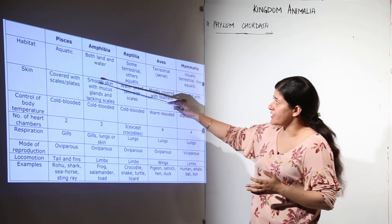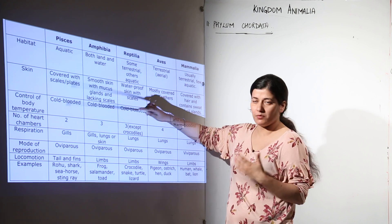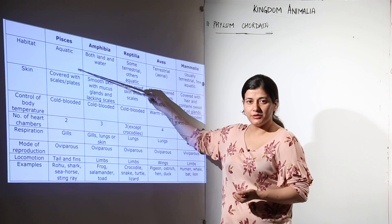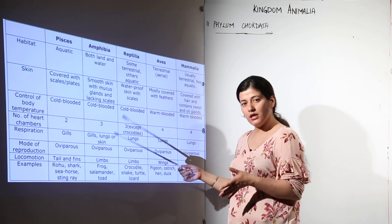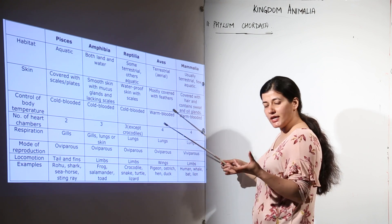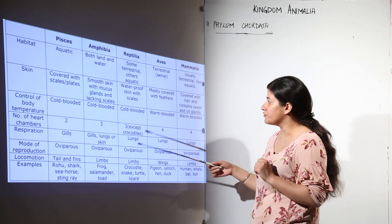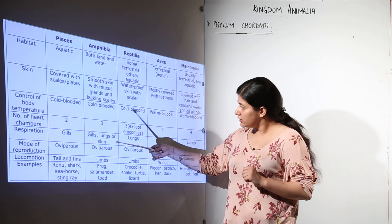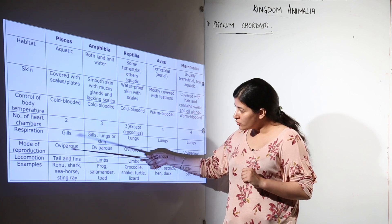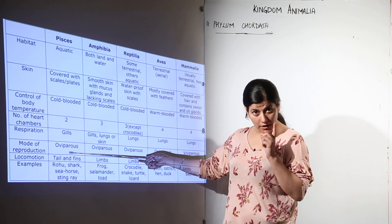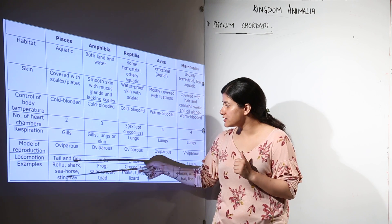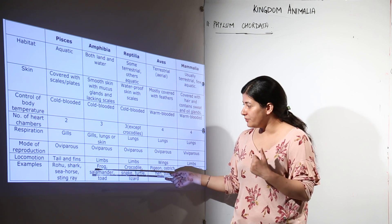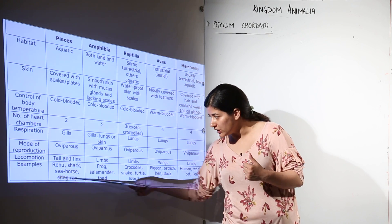When we talk about Pisces, all of them are aquatic — they could be freshwater or marine. Their body is covered with scales and plates; it could be cartilaginous, placoid scales, or ctenoid scales in the case of bony fishes. All of them are cold-blooded, the heart is two-chambered, respiration is by gills, and most of them are oviparous except for the sharks. Tails and fins are present according to which we study their main body plan.